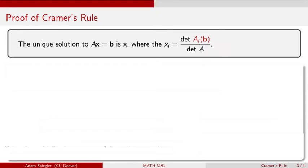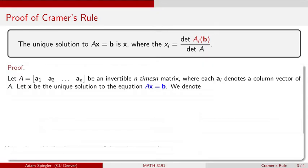So let's take a look at this proof in general. We're going to begin by taking a matrix A, assuming it is invertible and n-by-n. Each of the columns in matrix A we'll denote with bold A sub 1 for column vector 1, A sub 2 for column vector 2, and so on. The vector X denotes the unique solution to this matrix equation AX equals B for some fixed vector B in R^n.